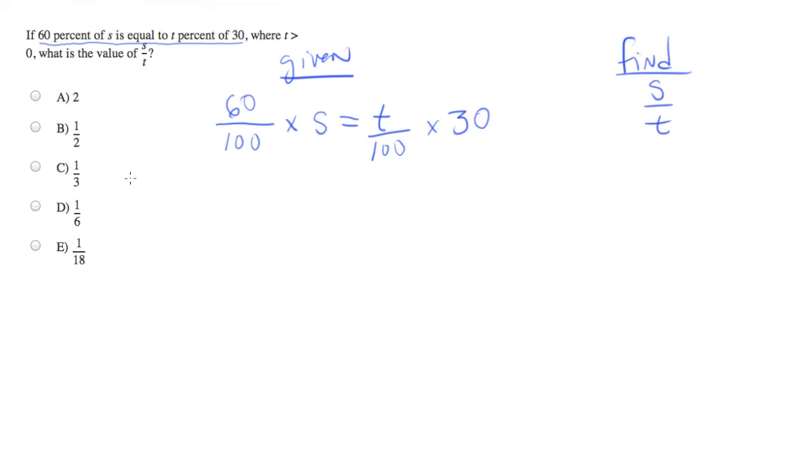So the game becomes, what can we do to convert this equation into s over t? The way that it looks to me that this is going to go is we need to take the t from the right side of the equation and move it to the left. So I'm going to divide both sides by t.